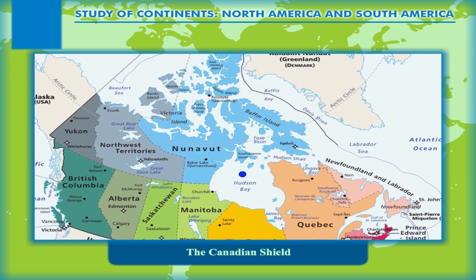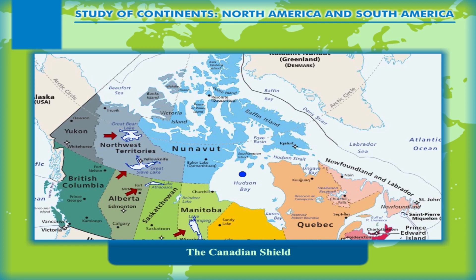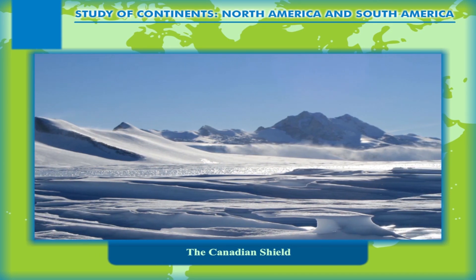The Canadian Shield, bordering the Hudson Bay, covers most of the land area of Canada. The region slopes northwards and eastwards and has several lakes spread all over the shield. Great Slave Lake, Great Bear Lake, Lake Winnipeg, Lake Athabasca, and the Great Lakes are some of the lakes that form a part of the Canadian Shield.